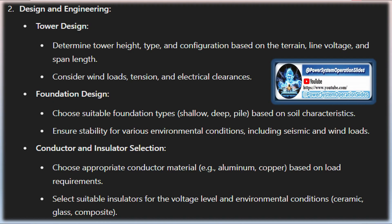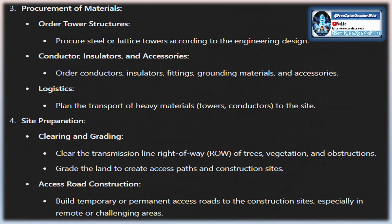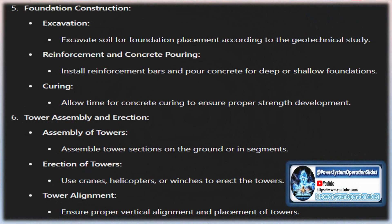One of the key aspects of this phase is the minimization of environmental and social impact. The proposed transmission line route must avoid or minimize interference with environmentally sensitive areas such as wetlands, wildlife habitats, national parks, and conservation zones. Additionally, densely populated urban areas should be bypassed to prevent disruptions to communities, reduce potential legal disputes, and avoid costly compensation for land acquisition.